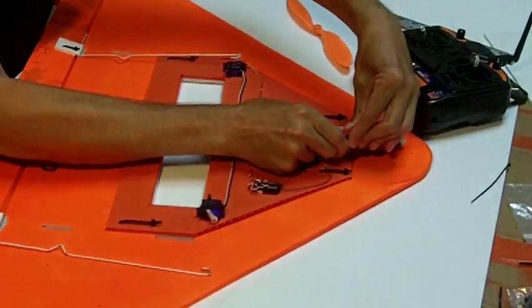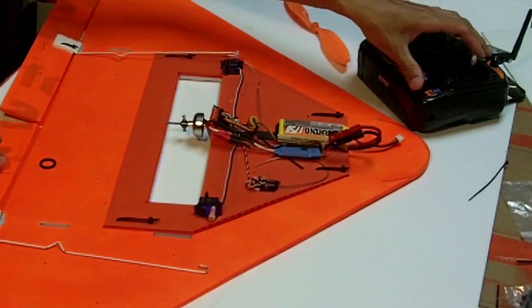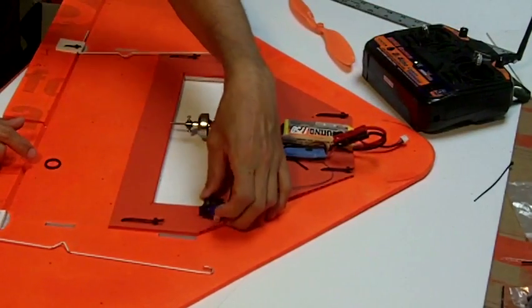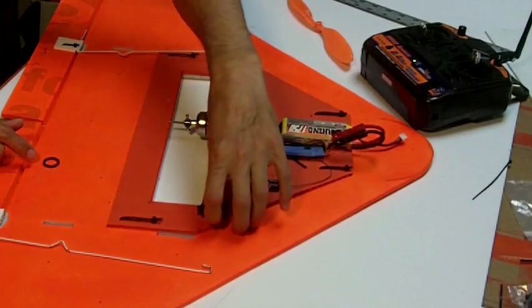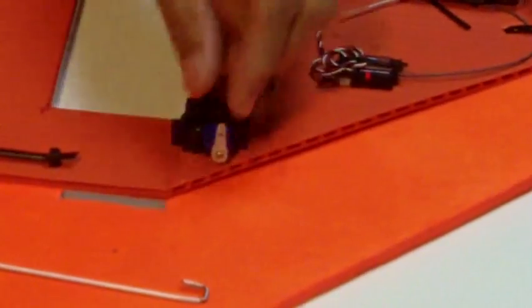And then we're going to turn the airplane on, plug it in, and we are now at neutral position. So before you screw this in, you want to turn the radio on, get it in neutral position. Then you'll add this control horn on and then screw it in when it's looking like this.